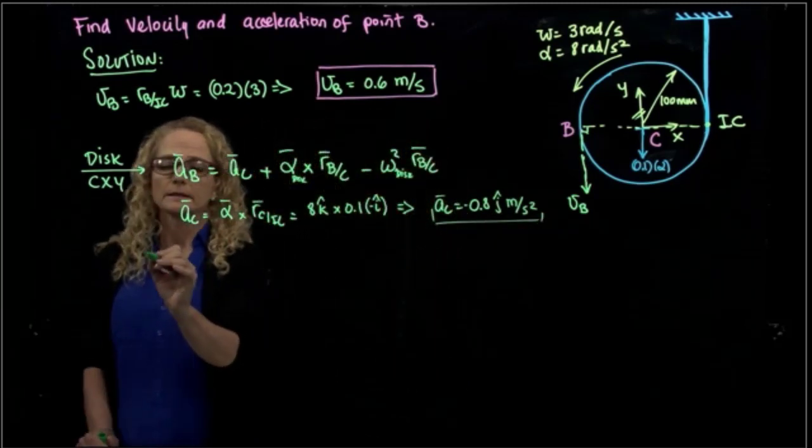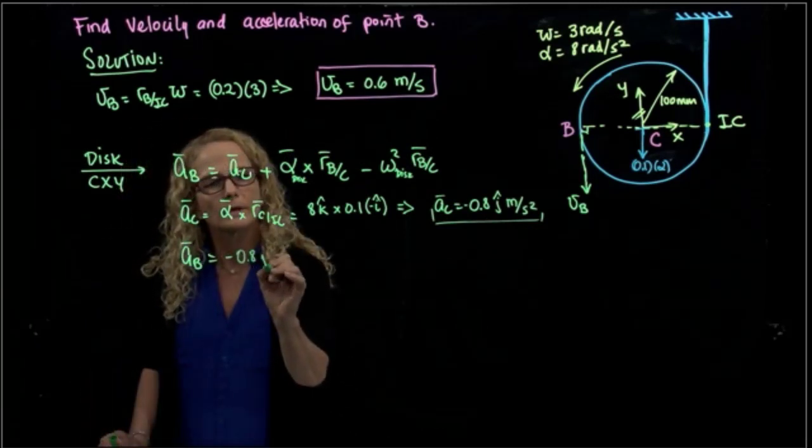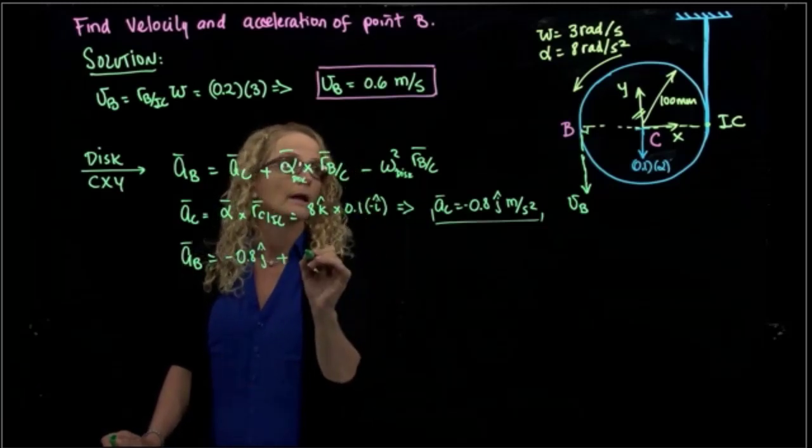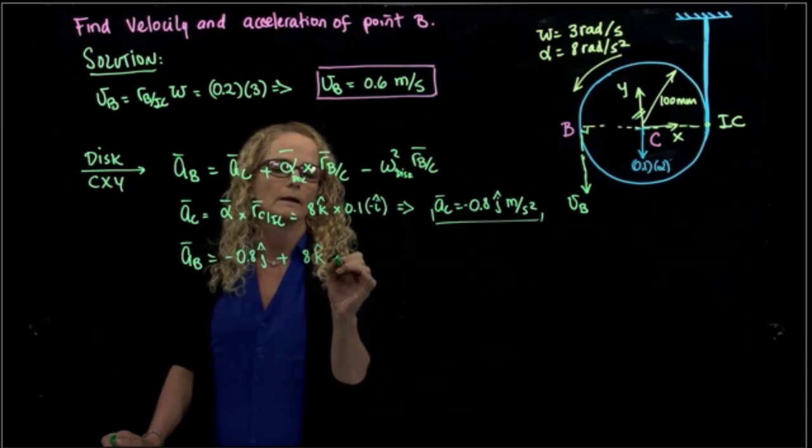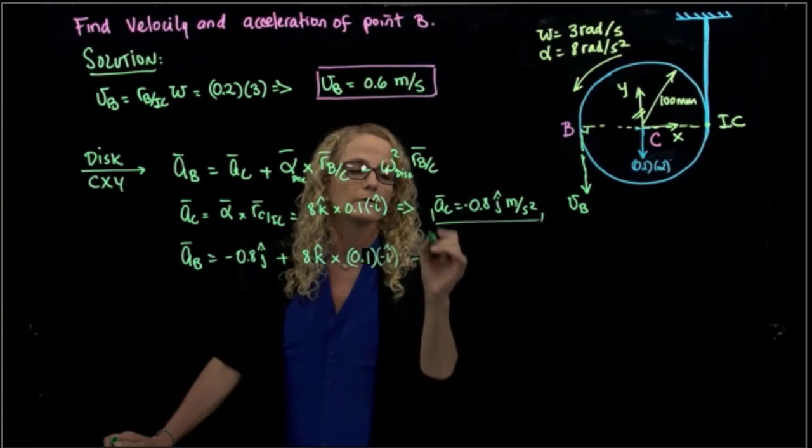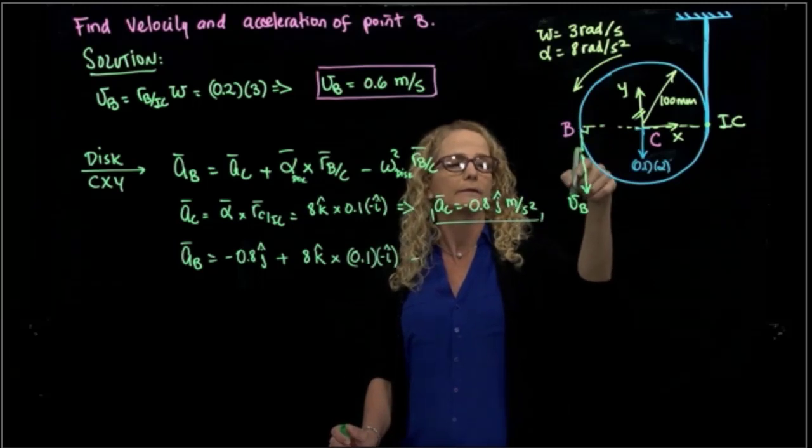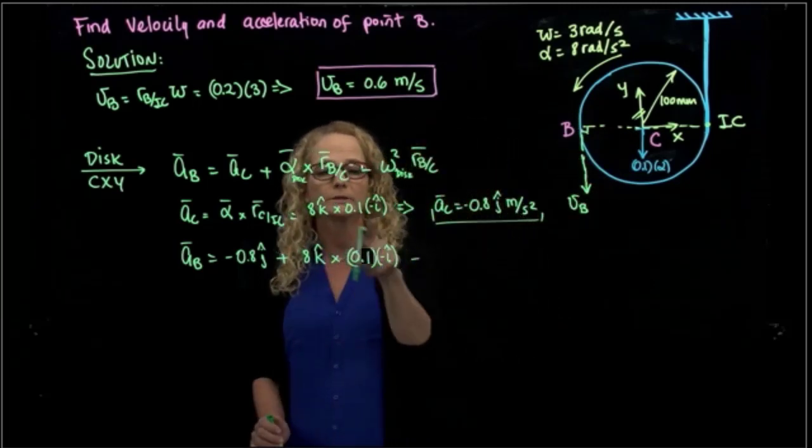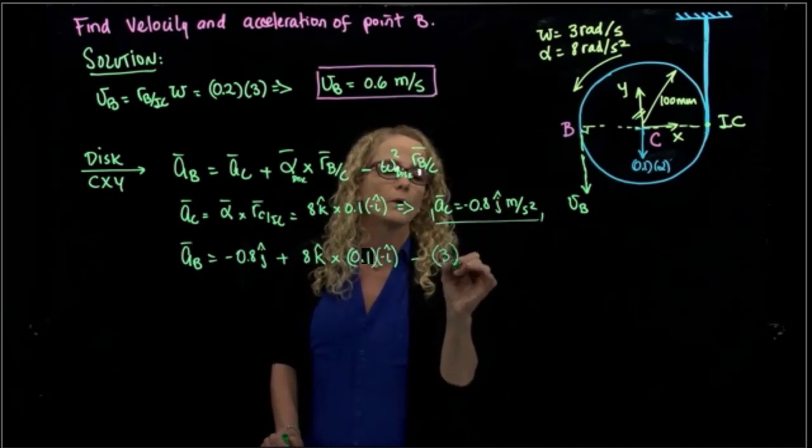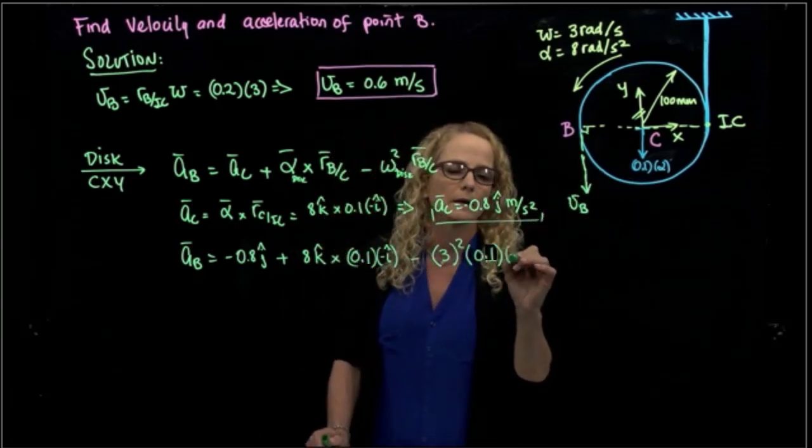And then the acceleration of B will be equal to negative 0.8. Here we have also 8 in K, and here is 0.1 in negative i. And then we have to remember that this point will have a normal acceleration and a tangential acceleration. So this will be 3 squared times 0.1, and the distance will be in negative i.